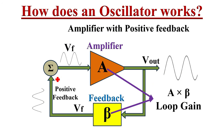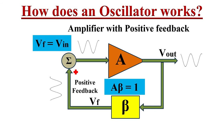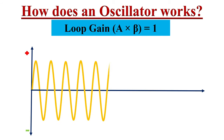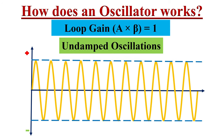Sustained oscillations are only possible when the loop gain A·beta is equal to 1. When A·beta equals 1, the feedback signal Vf will be the same as the input signal. Hence we will get sustained oscillations at the output. These types of electrical oscillations, whose amplitude remains constant with time, are called undamped oscillations.